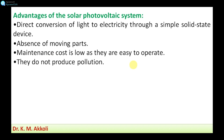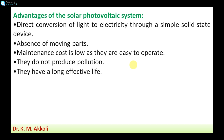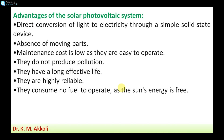As a non-pollutant and renewable energy source, the solar photovoltaic system does not produce any pollution. It has a long effective life — the solar panel or system has a longer life. They are highly reliable, meaning we can keep trust in the system. They consume no fuel to operate, as the sun's energy is free.